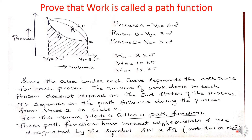Since the work done is different for different processes, the heat transfer will also be different, because as the area increases, heat transfer also increases. Both heat and work are called path functions — they are not dependent on the end states of the process, but are mainly dependent on the path followed during the process.